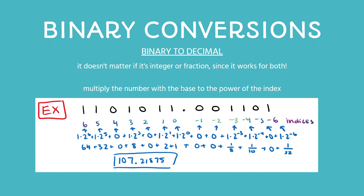In this example we have a large binary number. Any number to the left of the decimal point is a positive index and any number to the right of the decimal point is a negative index. You multiply the actual value of the number by the base to that index. For example, at positive index six, you take two to the six times one, and you keep repeating the same method to convert from binary to decimal.